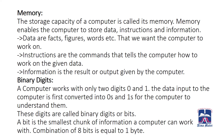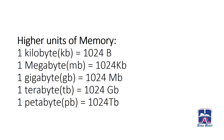In this table I will show you the higher units of memory. One kilobyte is equal to 1,024 bytes. One megabyte is equal to 1,024 kilobytes. One gigabyte is equal to 1,024 megabytes. One terabyte is equal to 1,024 megabytes. One petabyte is equal to 1,024 terabytes, and so on.